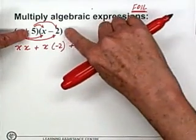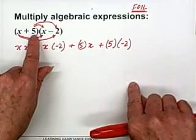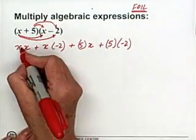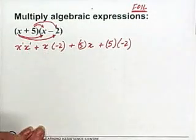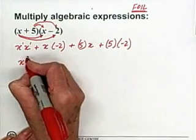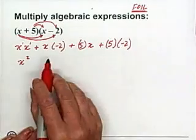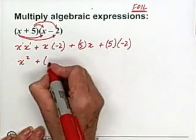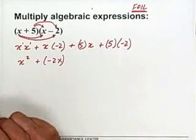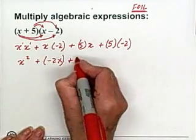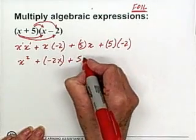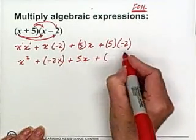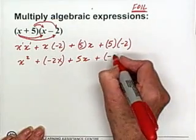Then you went to the last terms. The L stands for last. 5 times the -2. This is the last term and the last term. So this is x¹ times x¹. That becomes x². Here we have plus. This is -2 times x which becomes -2x. Now we have plus 5 times x which is 5x. And then we have plus 5 times -2 which is -10.